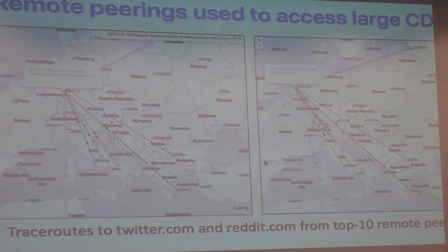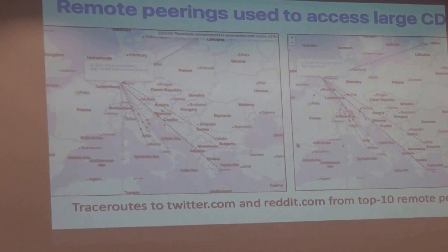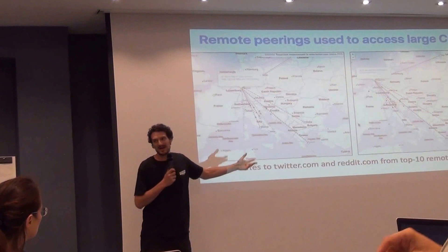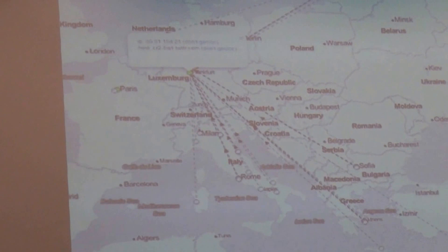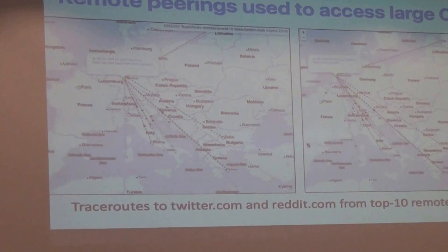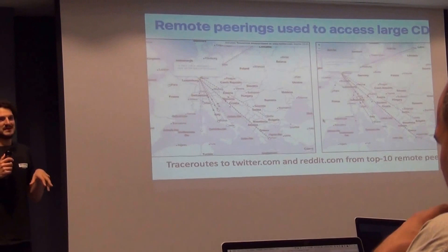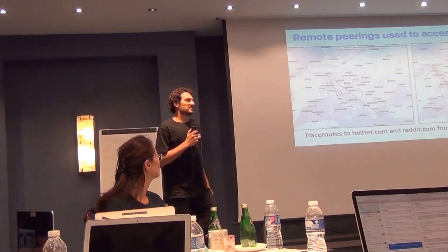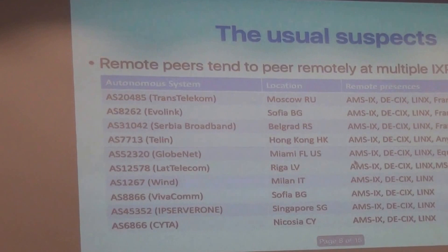We then tried to see whether these remote peers are used to access small ASes that are not available elsewhere, or large content. What we found is that most of the remote peers access large content providers. Interestingly, some ASes in Athens or Cyprus who are well-connected in the local peering ecosystem have to go all the way to Amsterdam or Frankfurt to access Cloudflare, Twitter, or Facebook, because these CDNs are not in the local ecosystem. So it matters not just how dense the local ecosystem is, but also whether the CDN is present.